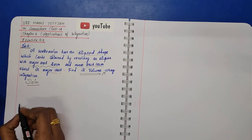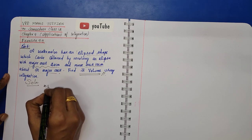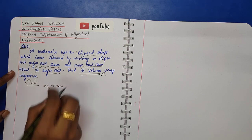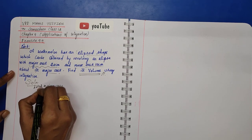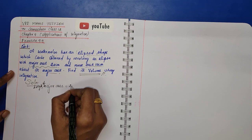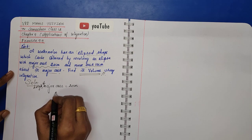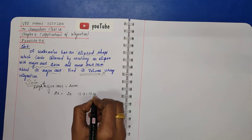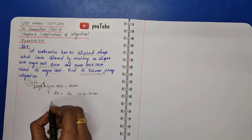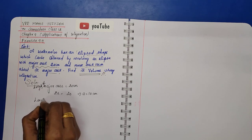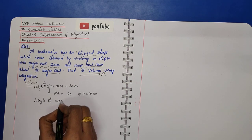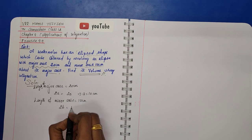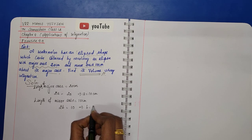Solution. The length of the major axis is 20 centimeters. Since the major axis equals 2a, we have 2a = 20, which implies a = 10 centimeters. The minor axis length is equal to 10 centimeters, so 2b = 10, which implies b = 5 centimeters.